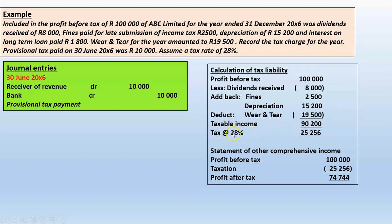Based on taxable income of 90,200 rand, we calculate tax at 28 percent, which equals 25,256 rand. In the statement of profit or loss, profit before tax remains 100,000 rand, the taxation line shows 25,256 rand, giving a profit after tax of 74,744 rand, followed by other comprehensive income to derive total comprehensive income.